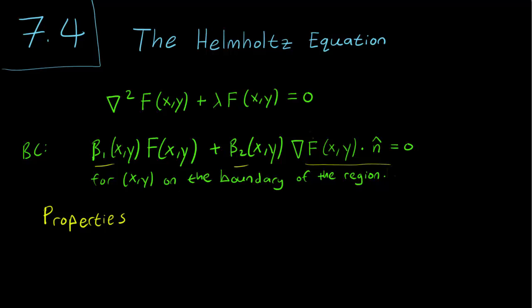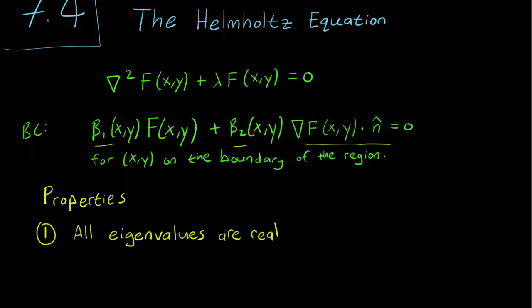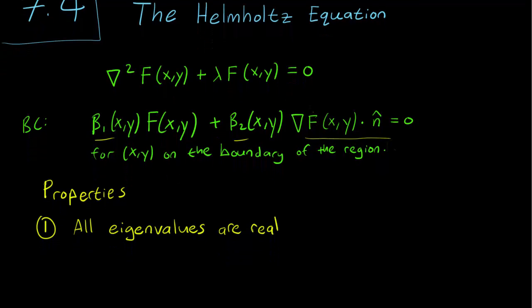The Helmholtz equation is typically pretty difficult to solve directly, but we do know some general properties, and let's list them. The first property is that all the eigenvalues, lambda, are going to be real, and again this is similar to all the Sturm-Liouville problems we handled in the past, even in one dimension.